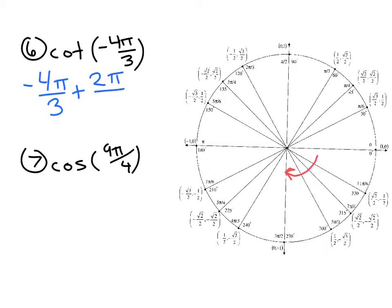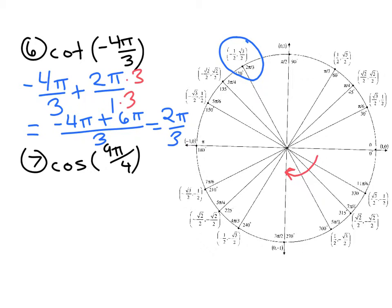Now to combine those, we need a common denominator. So I'll think of that as two pi over one, and multiply numerator and denominator times three, so that I have negative four pi plus the two pi times three gives me six pi, all over that common denominator of three. And so negative four plus six, that gives me positive two pi over three,